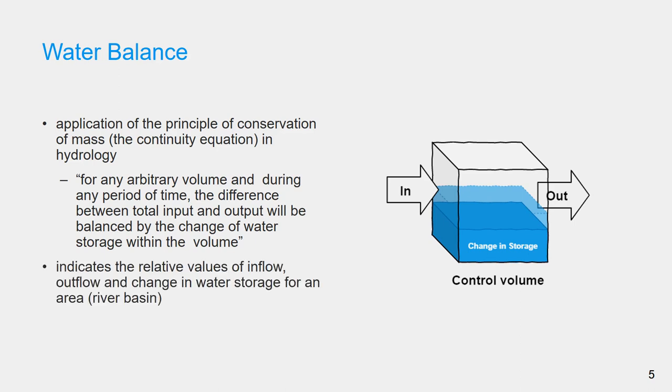Water balance studies provide an indirect evaluation of an unknown water balance component from the differences between the known components. For example, long-term evapotranspiration from a river basin may be computed as the difference between precipitation and surface runoff.